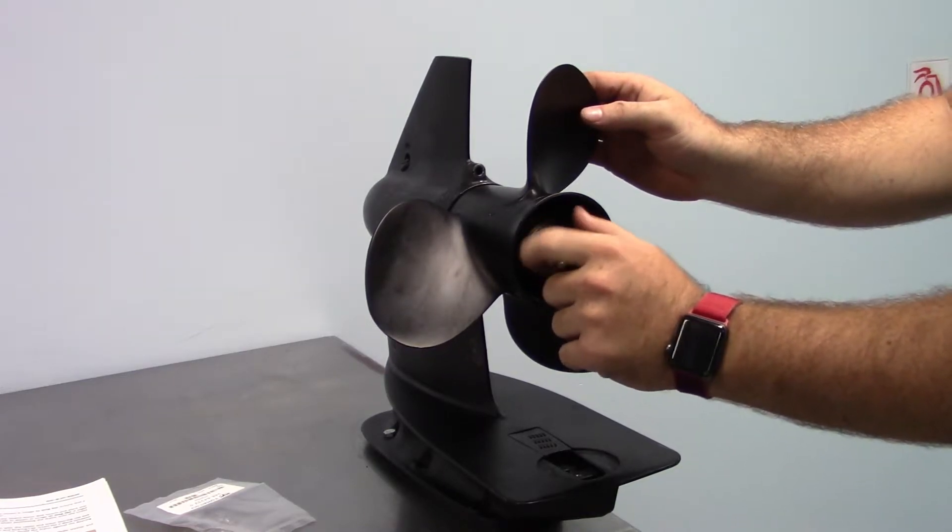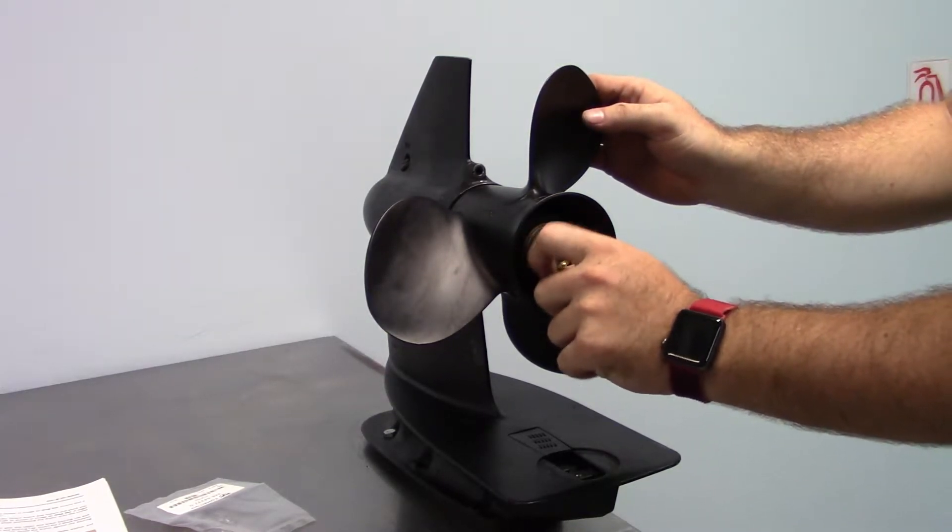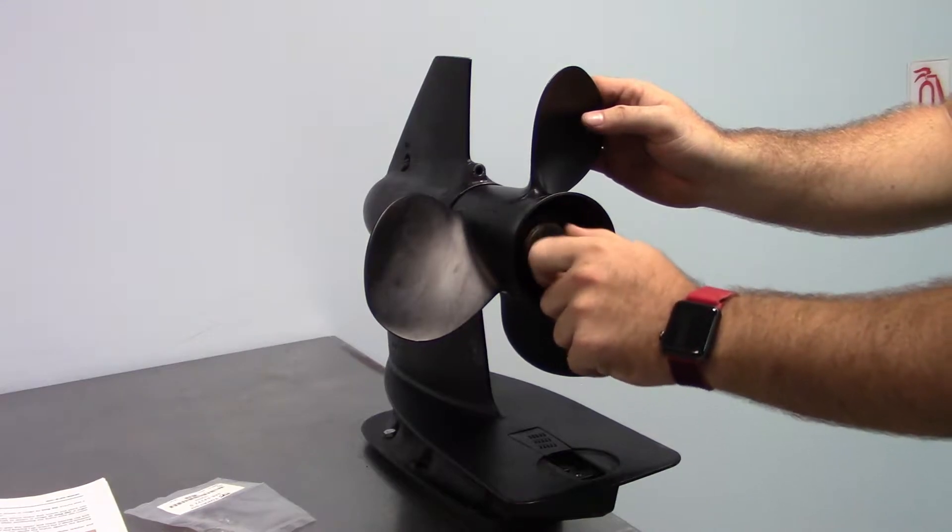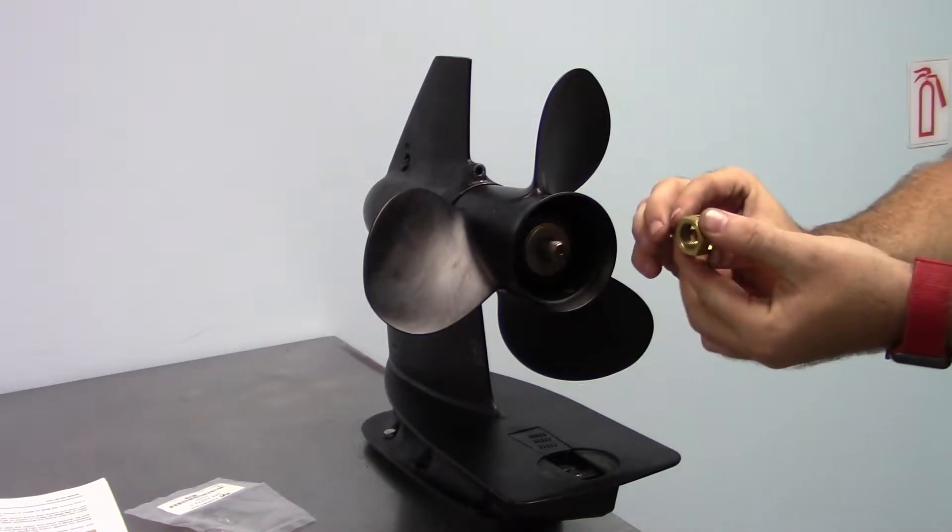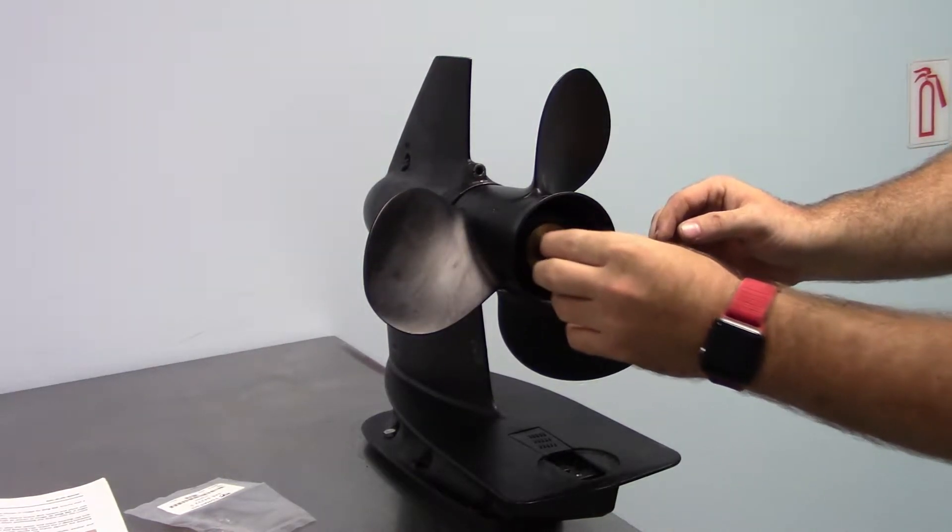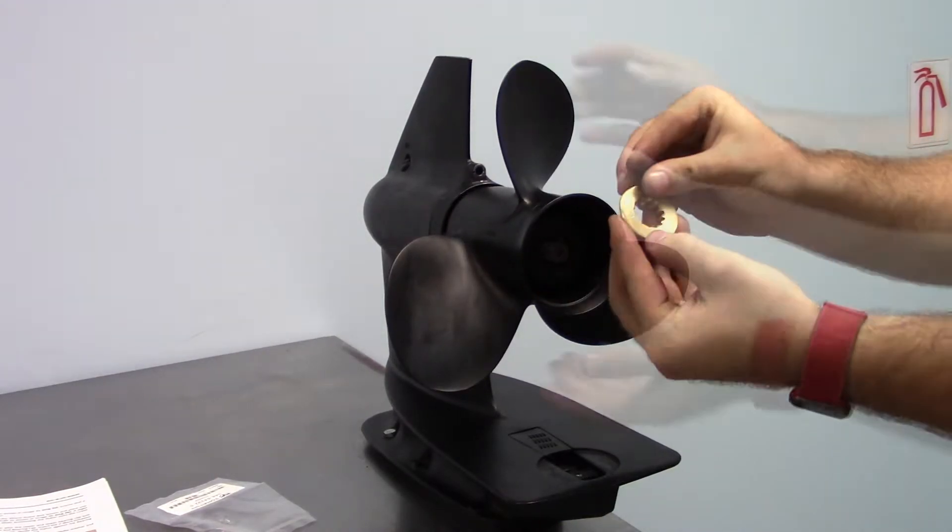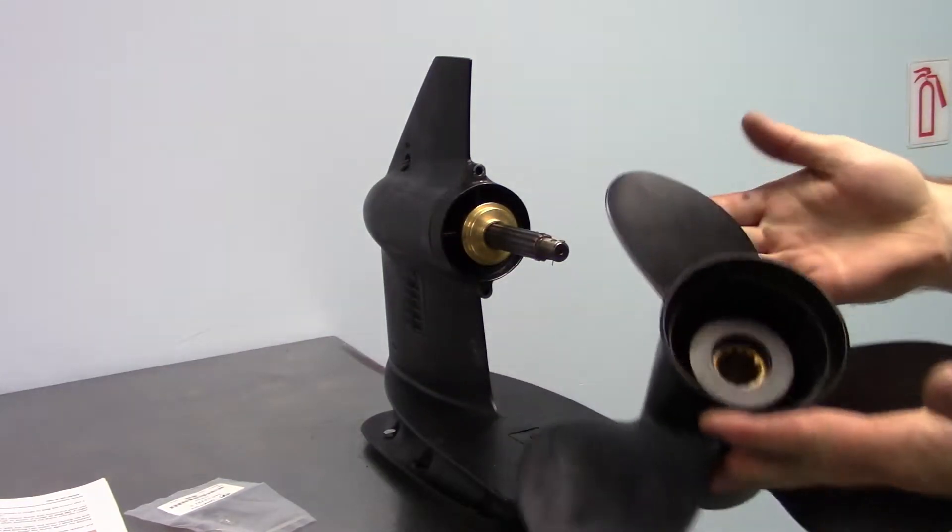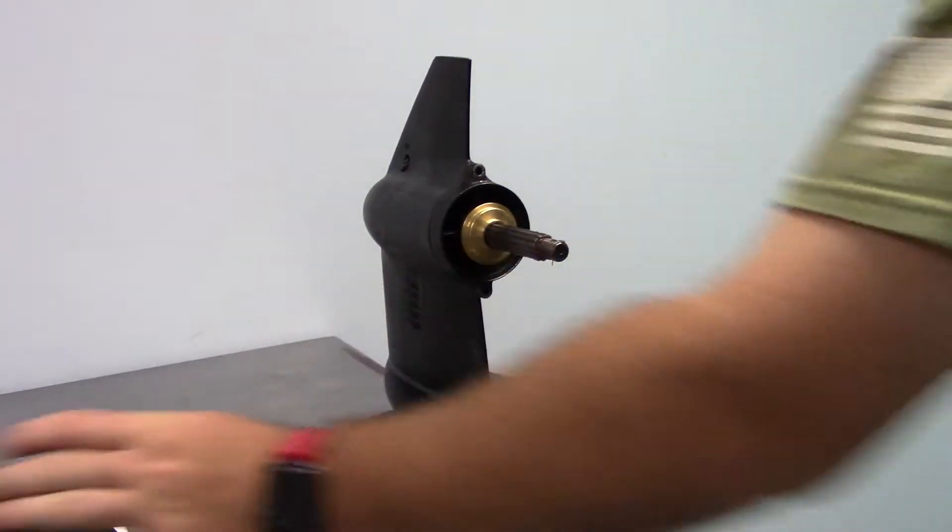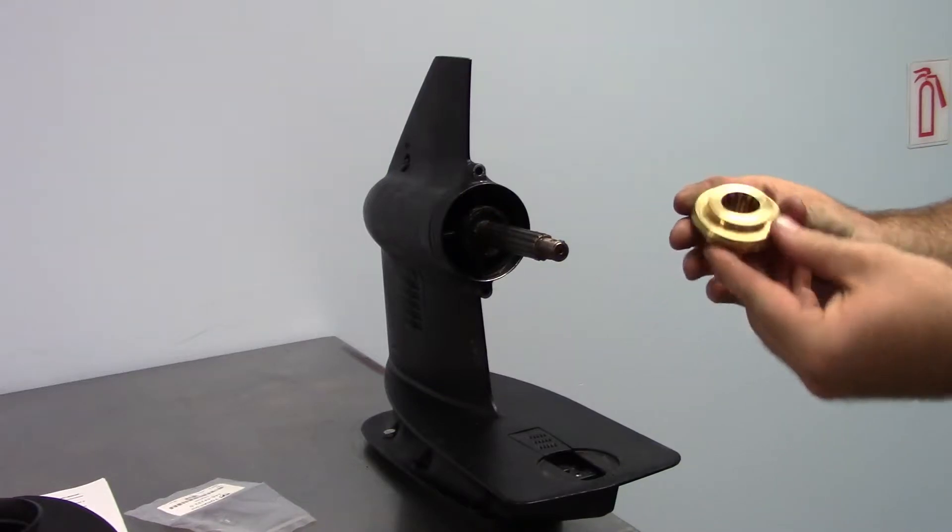First, remove the cotter pin and castle nut from the prop shaft. Next, remove the washer and stopper from the prop shaft. Remove the propeller and the thrust washer. Retain the thrust washer for reinstallation.